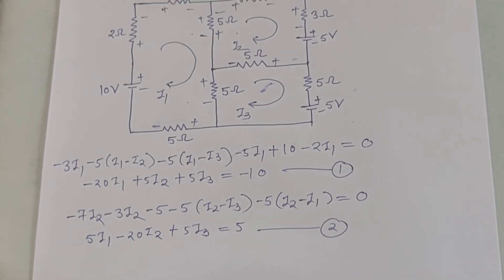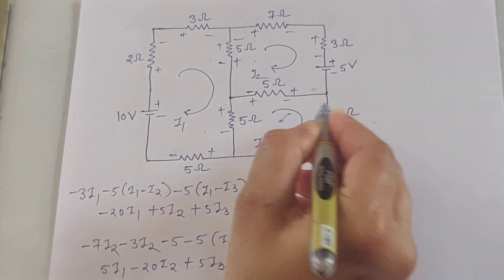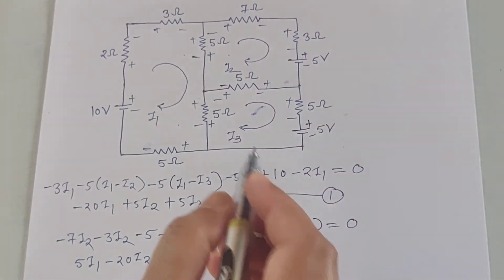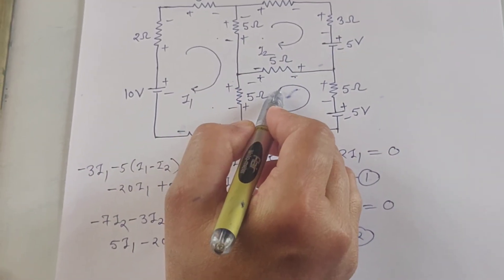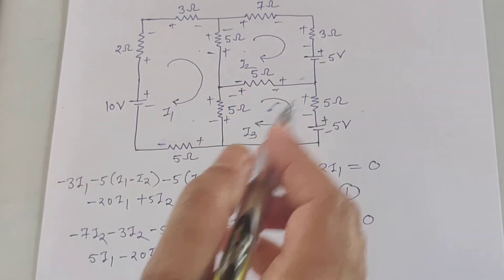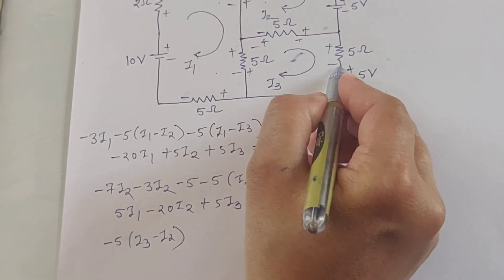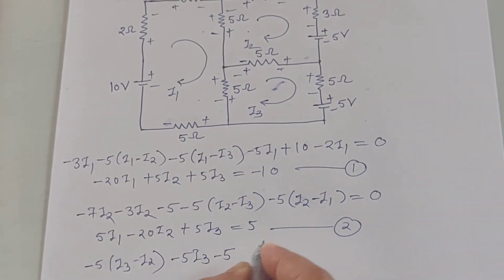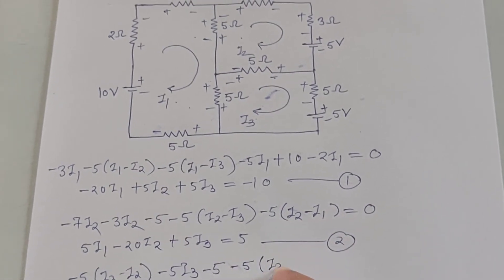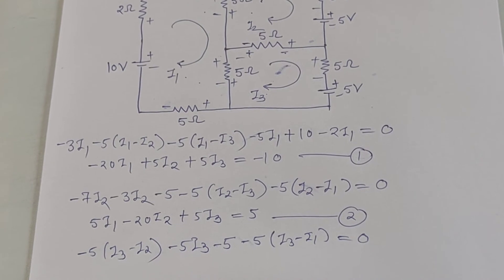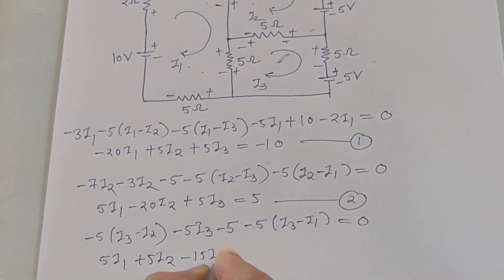Now apply KVL for the third loop. Mark the polarity plus/minus. The current is I3. The 5-ohm is common for second and third loop, so it is minus 5·(I3 minus I2), then minus 5·I3 minus 5 volts, and the other 5-ohm is common for first and third loop, so minus 5·(I3 minus I1), equals zero. Solving gives: 5·I1 plus 5·I2 minus 15·I3 equals 5. That is your third equation.